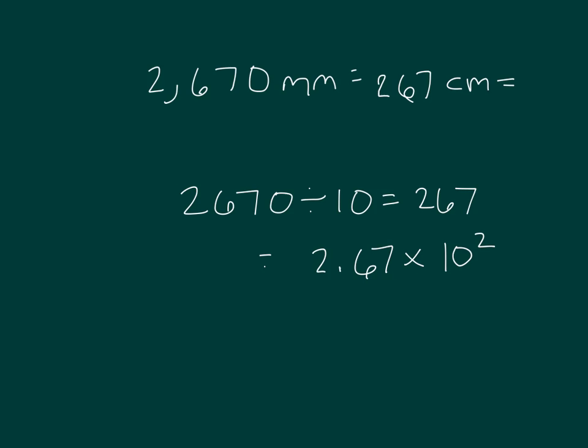How would we write that as a decimal, then? Well, let's see. It's 2.67 times 10 squared divided by 100, because there's 100 centimeters in a meter. And so the answer there is 2.67. So again, we're going from a smaller unit to a larger unit. 10 millimeters in each centimeter, and 100 centimeters in each meter.